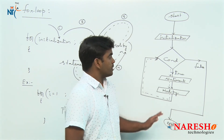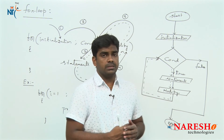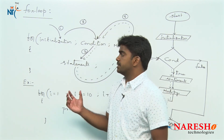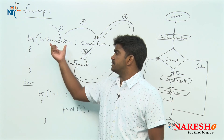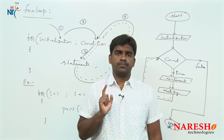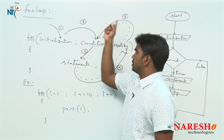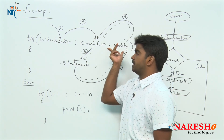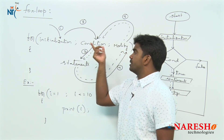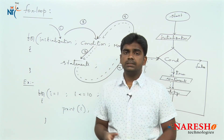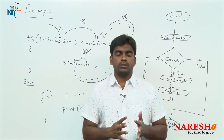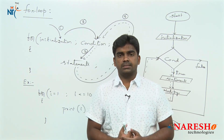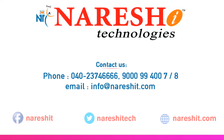This is how the for loop executes — the flow as well as the syntax. Initialization executes only once, and the loop repeats as long as the condition is true. Once the condition has failed, it terminates. Hope you understood. For more videos, please subscribe to the Naresh IT channel. Thank you.